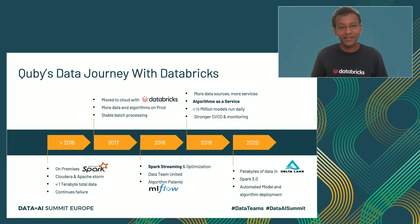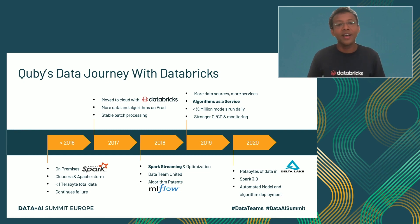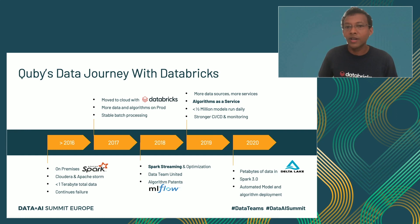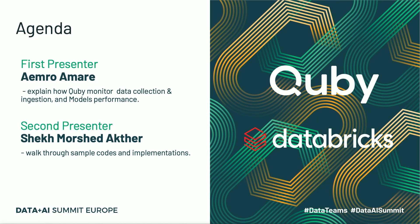If you are a data engineer who has been working in a big data environment for a long period of time, it's normal that you start with some unstable environments and then go through different patterns of improvements. Kiwi has also passed through the same case. In 2017, we partnered with Databricks and created a very stable environment. In the following years, we started using MLflow and Spark streaming, did quite a lot of tuning and optimization, and started running millions of models on a daily basis. Currently, we have Delta Lake and we are running Spark streaming. I'm going to explain how Kiwi monitors data collection, ingestion, and model performance.